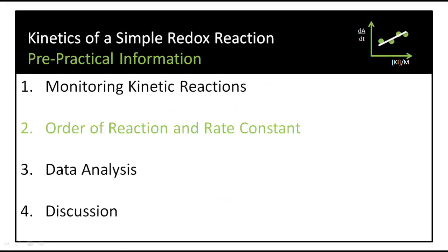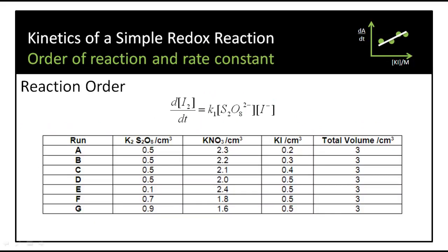So how do we determine the order of reaction and the rate constant in general? These are the reaction mixtures we're going to make up. You can see here in runs A to D, the concentration of persulfate is held constant while the concentration of iodide is increased.